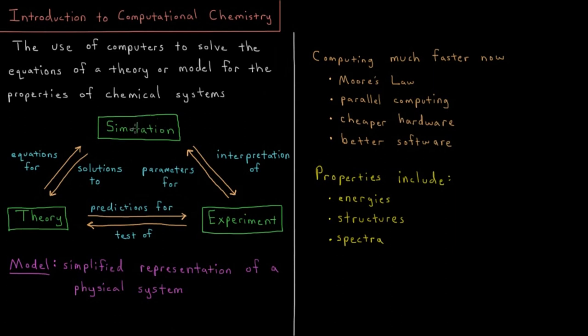Additionally, sometimes there are free parameters in these equations of the theory, values which we are free to set to different values. Experiment can help us refine these simulations by choosing what are called empirical parameters, parameters that we would get from experiment. So those three branches of science all feed into one another, and simulation is particularly the part we're most interested in in this course.